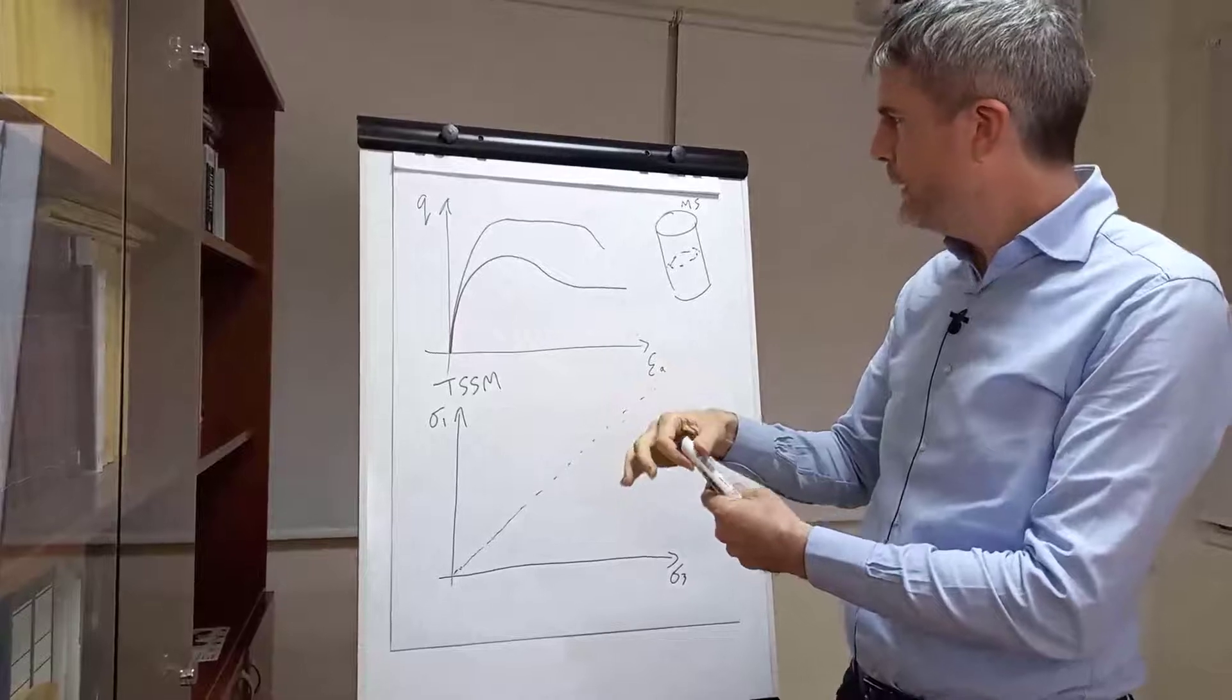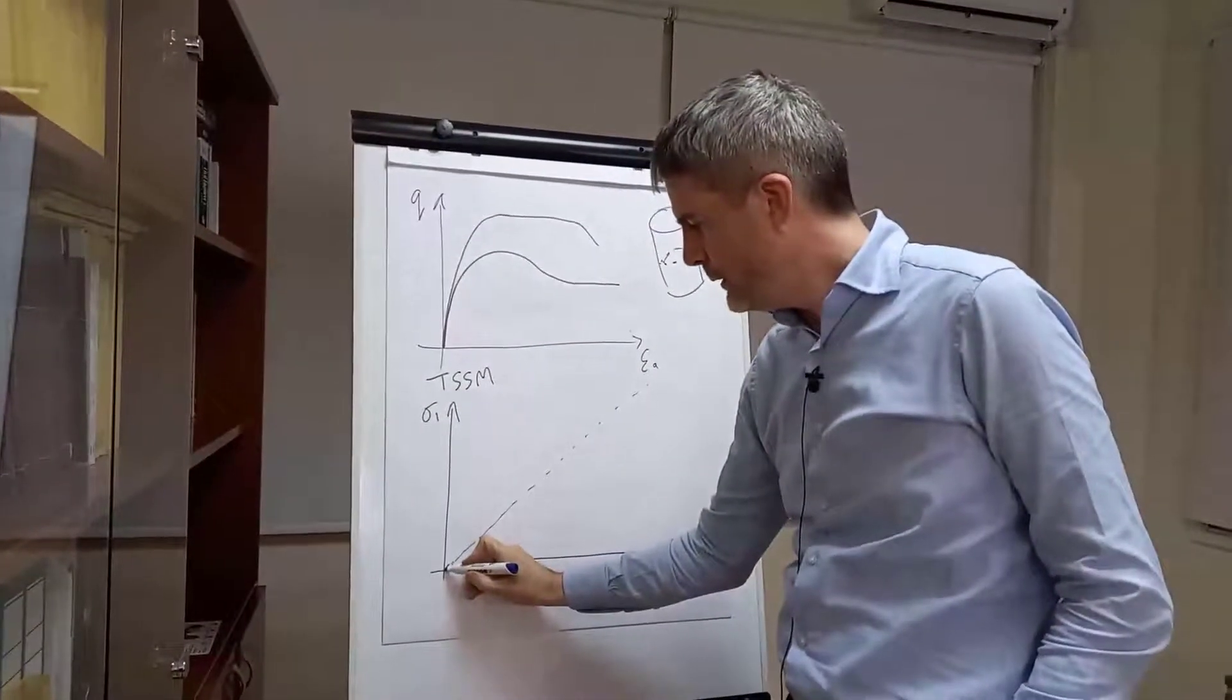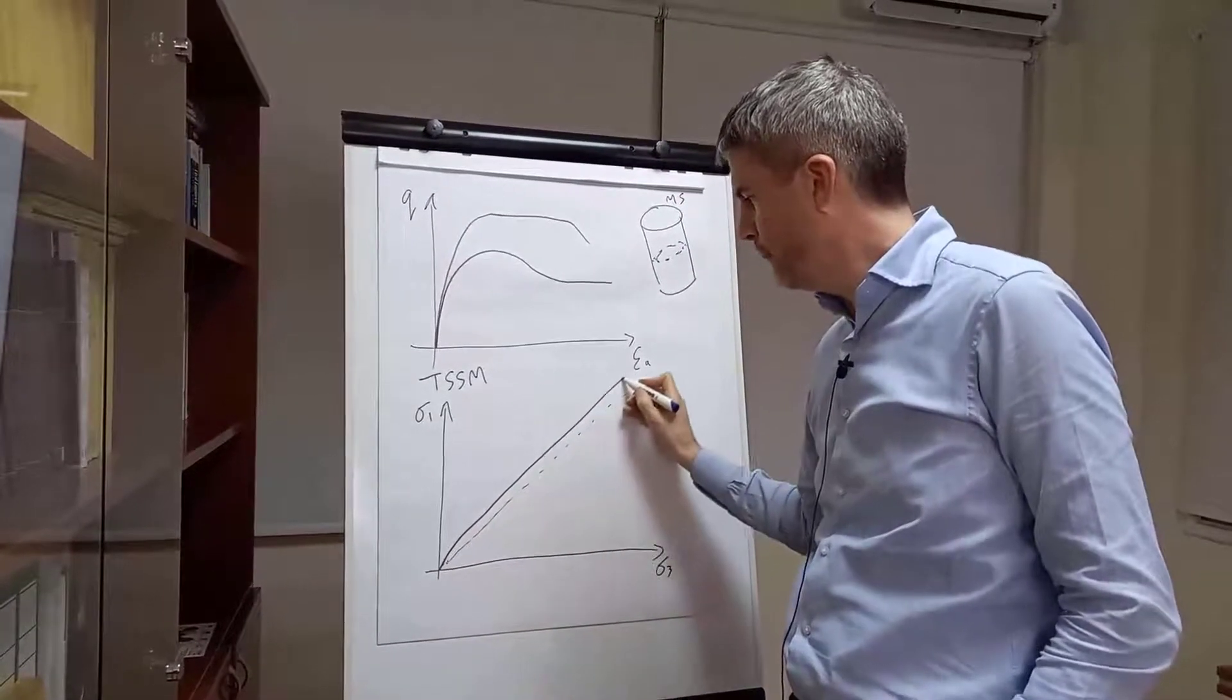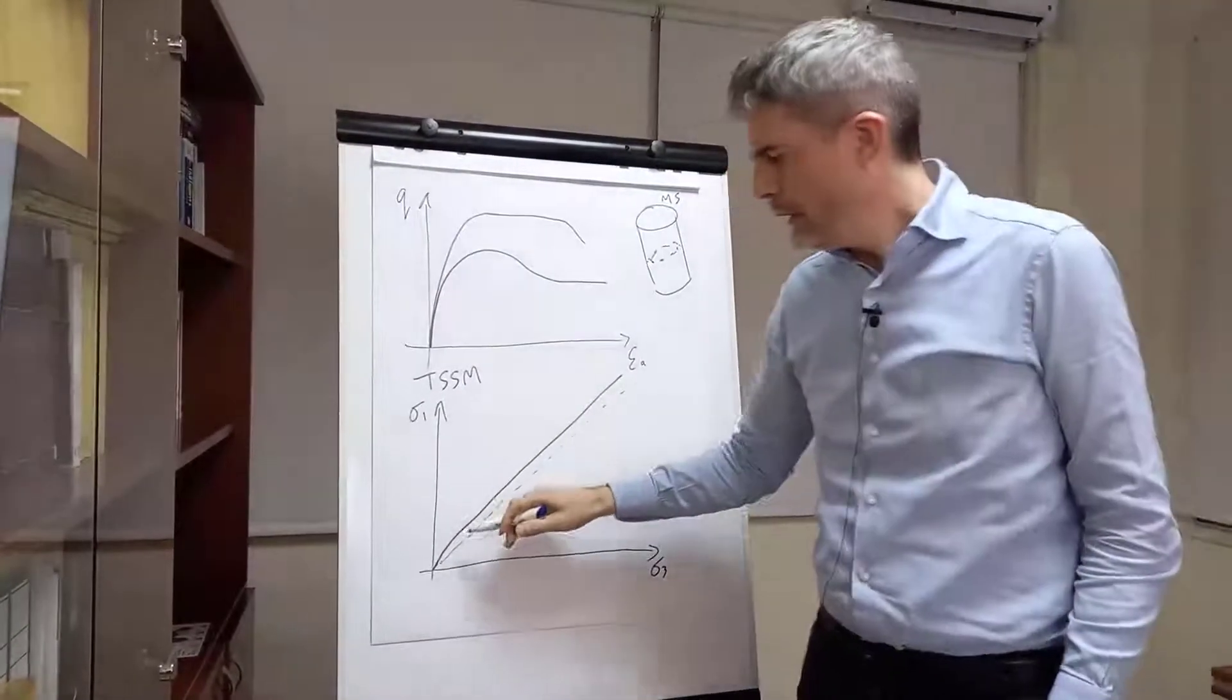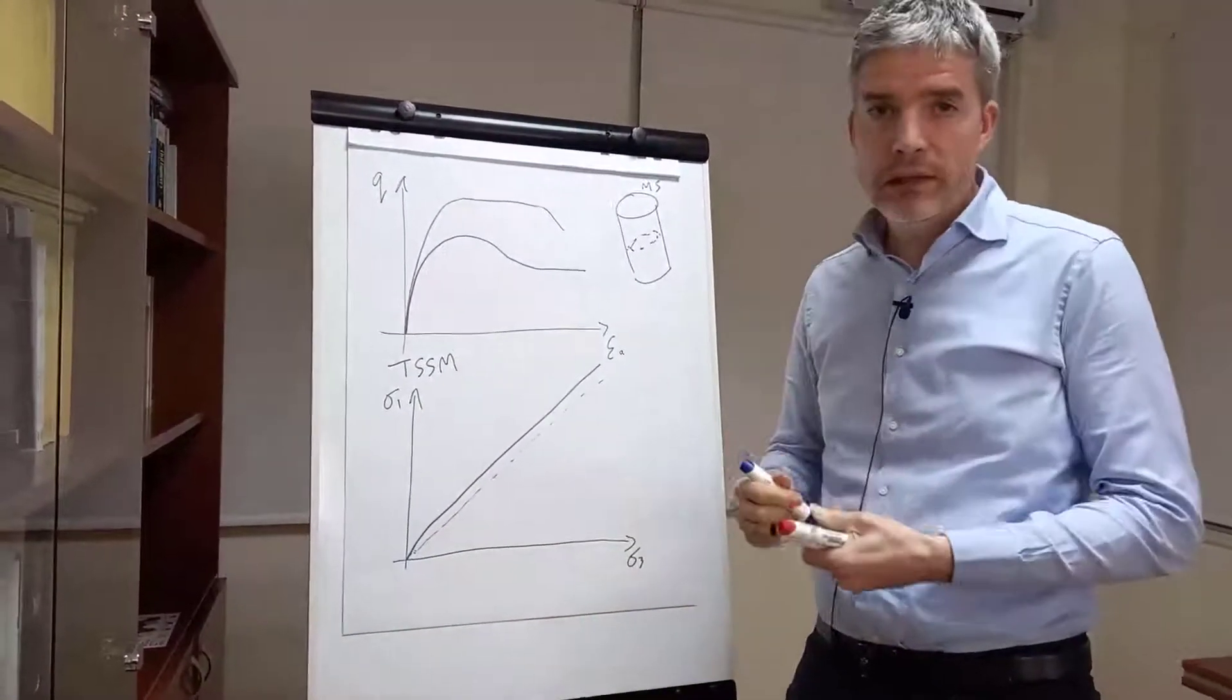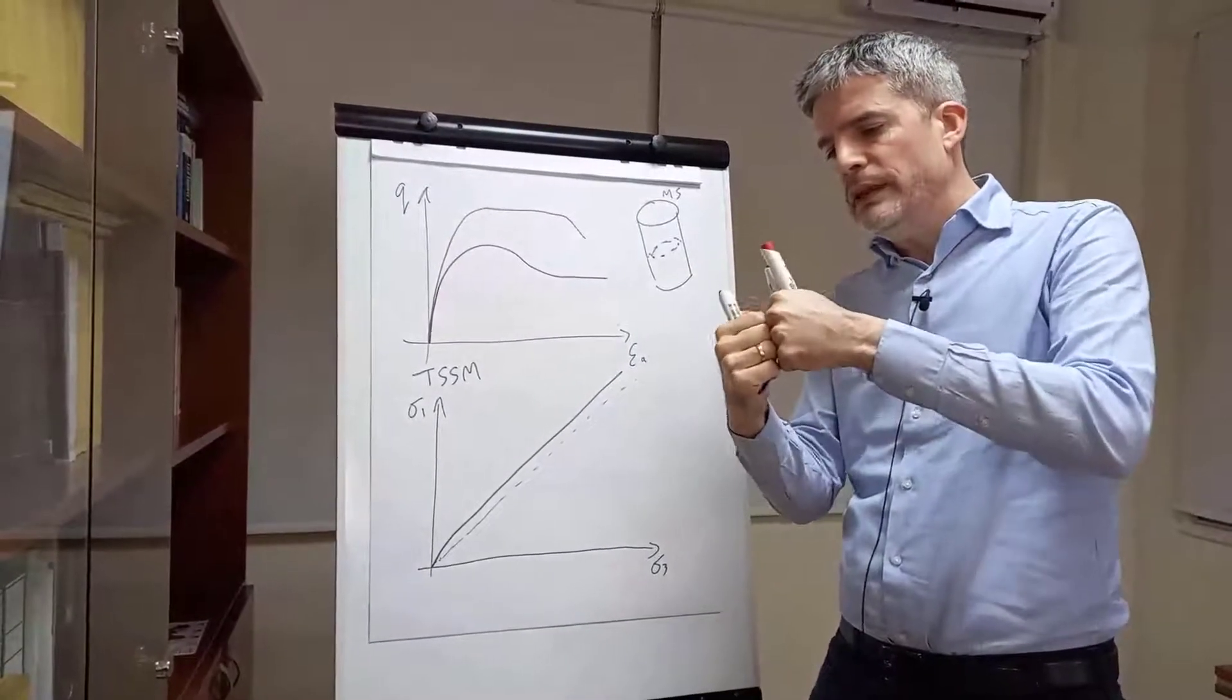When we have a non-stabilized aggregate, we can get a slightly non-linear failure envelope like that. Now, this happens in dense coarse aggregates. It's due to dilatancy in the aggregate, so the particles are very dense. In order to shear, they have to dilate a little bit.